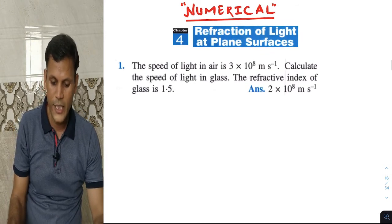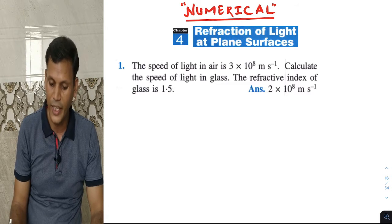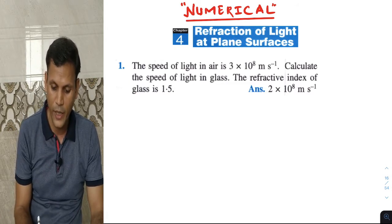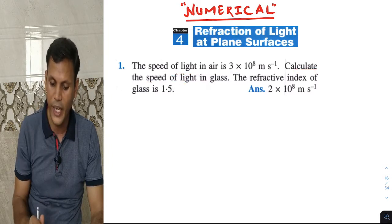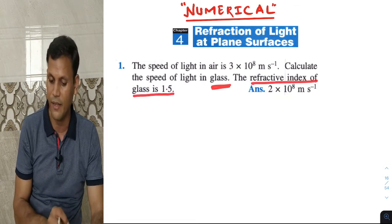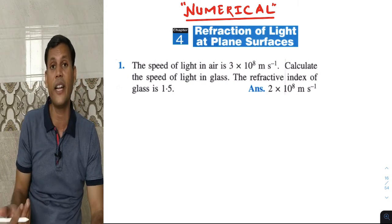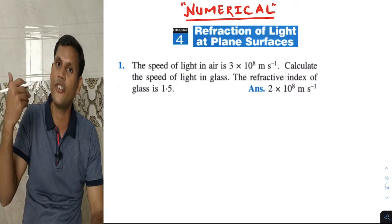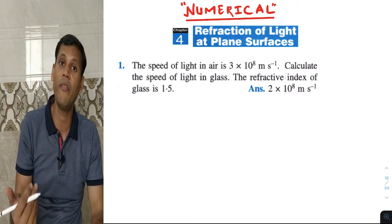First sum: the speed of light in air is 3 into 10 raise to 8 meter per second. Calculate the speed of light in glass. The refractive index of glass is given. We know the refractive index formula: refractive index equals speed of light in air upon speed of light in medium. That formula we will use.